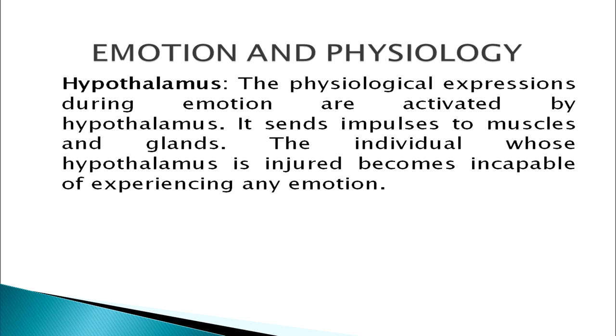The last physiological change involves the hypothalamus during emotional arousal. The physiological expressions during emotion are activated by the hypothalamus, which sends impulses to muscles and glands. An individual whose hypothalamus is injured becomes incapable of experiencing any emotion. So this is how the adrenal glands, the hypothalamus, and the autonomic nervous system act when we are under an emotional state.